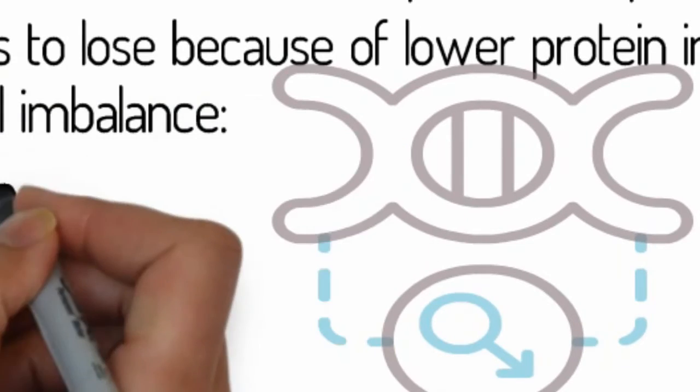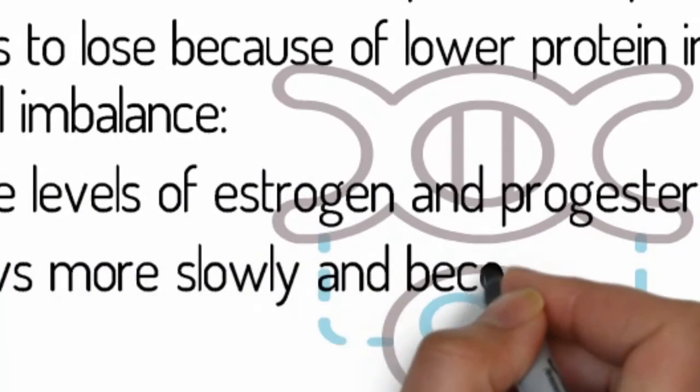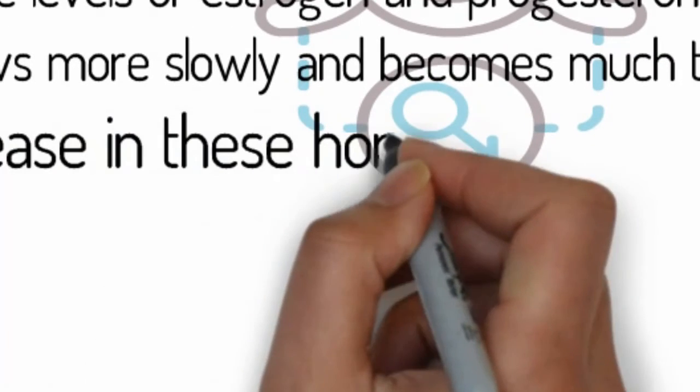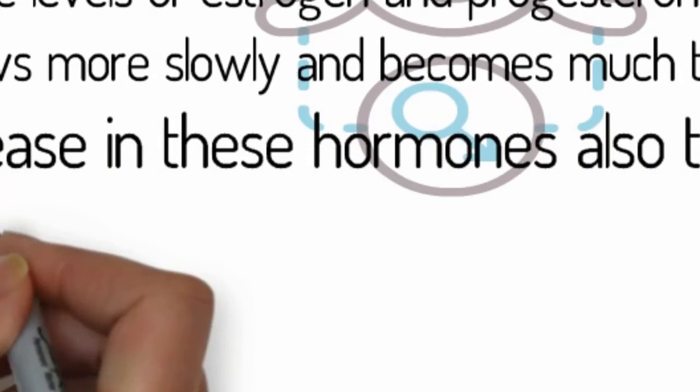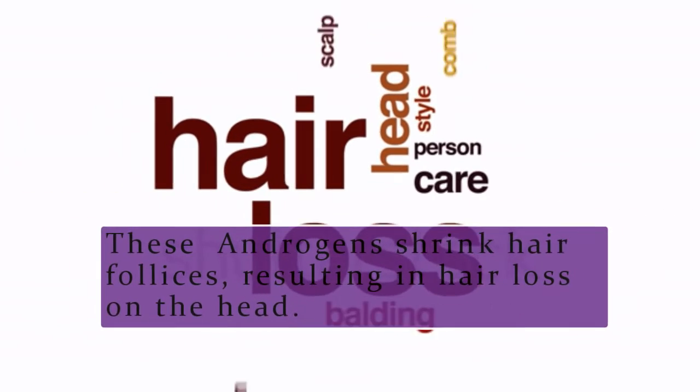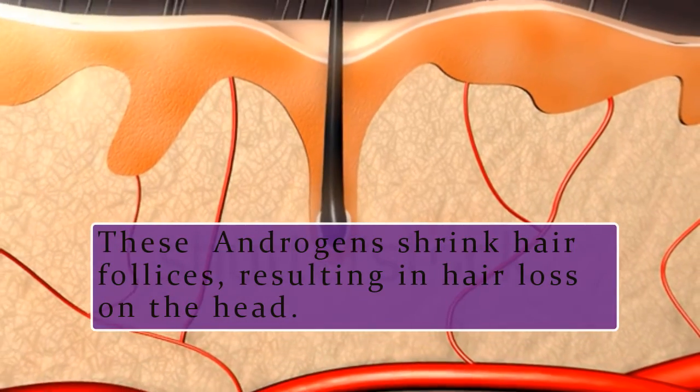Hormonal imbalance: When the levels of estrogen and progesterone drop, hair grows more slowly and becomes much thinner. A decrease in these hormones also triggers an increase in the production of androgens. These androgens shrink hair follicles, resulting in hair loss on the head.